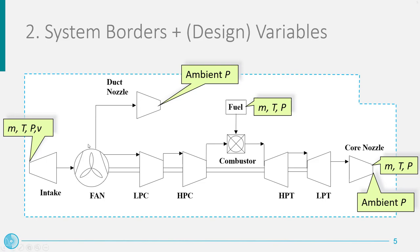Continuing with our application, we can include among the border variables also the thrust delivered by the engine over time, or as an alternative, the controlled variables that will be monitored by the control system, such as the rotational speed of the low-speed shaft, as you will discover in the next lecture.